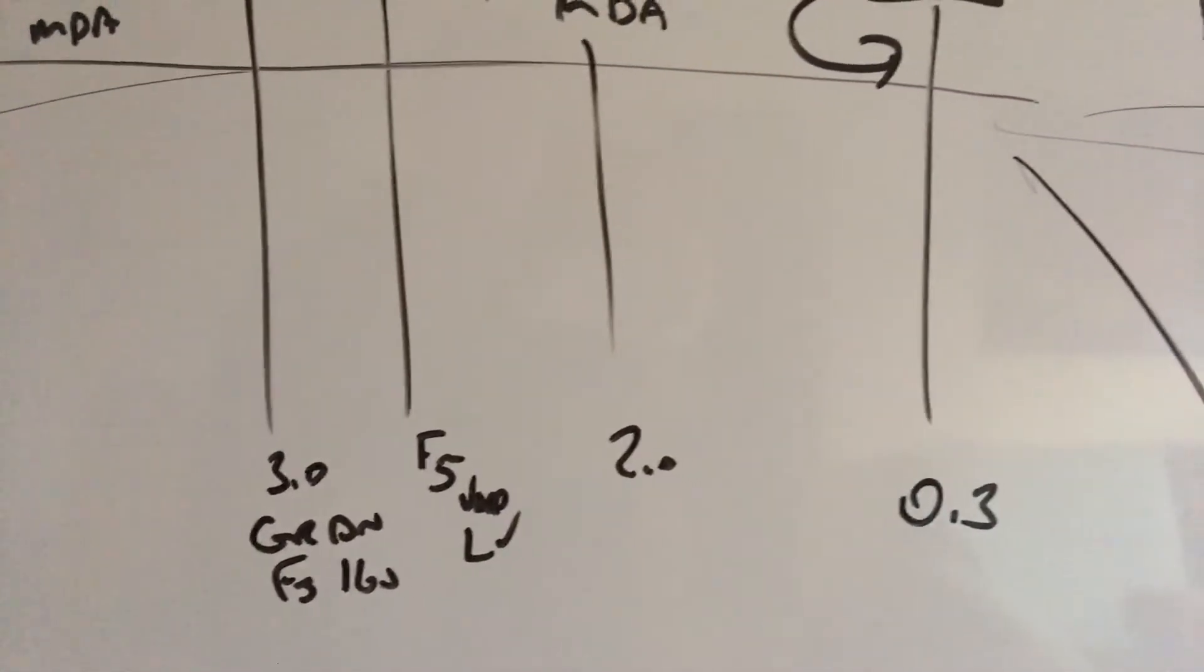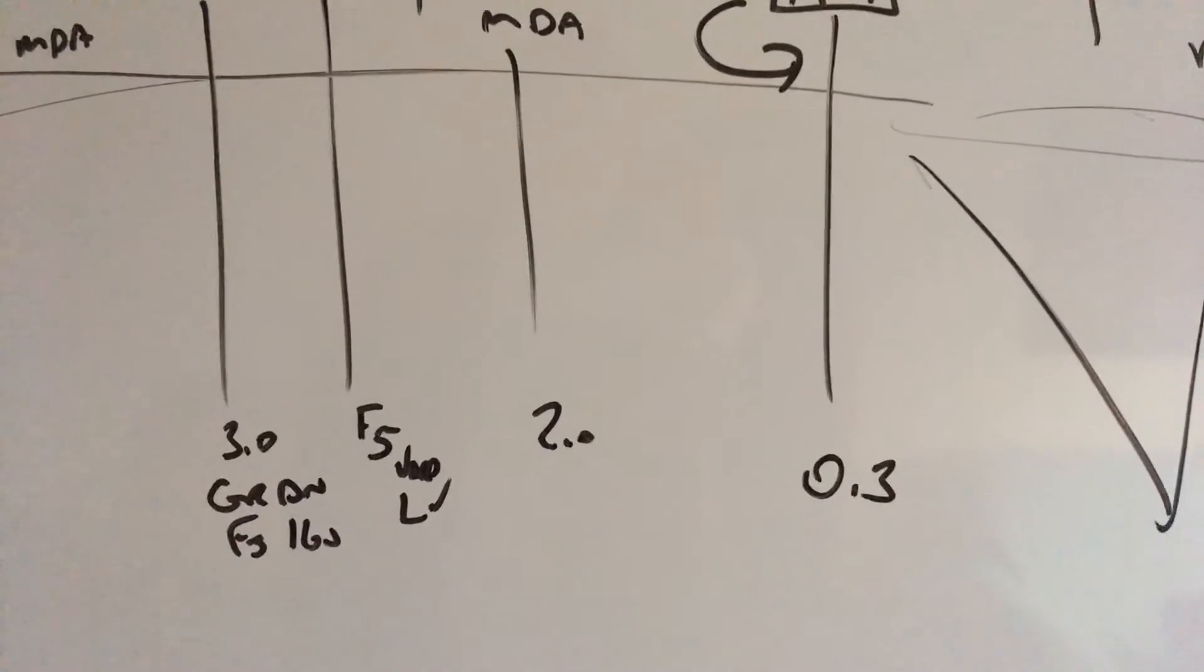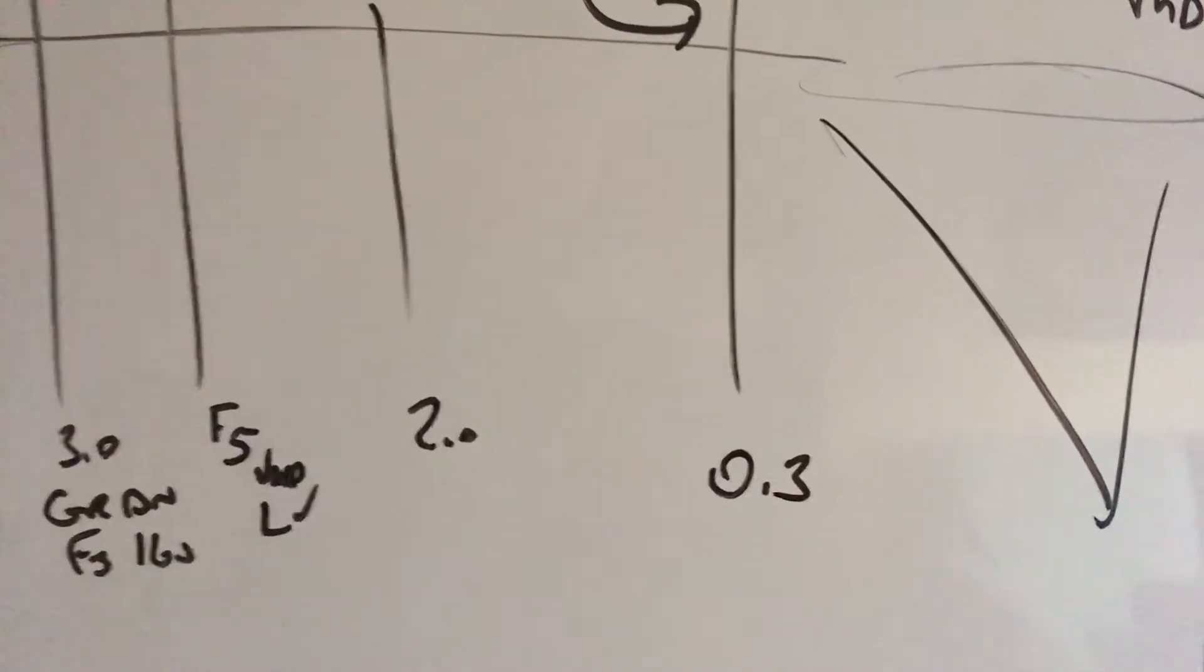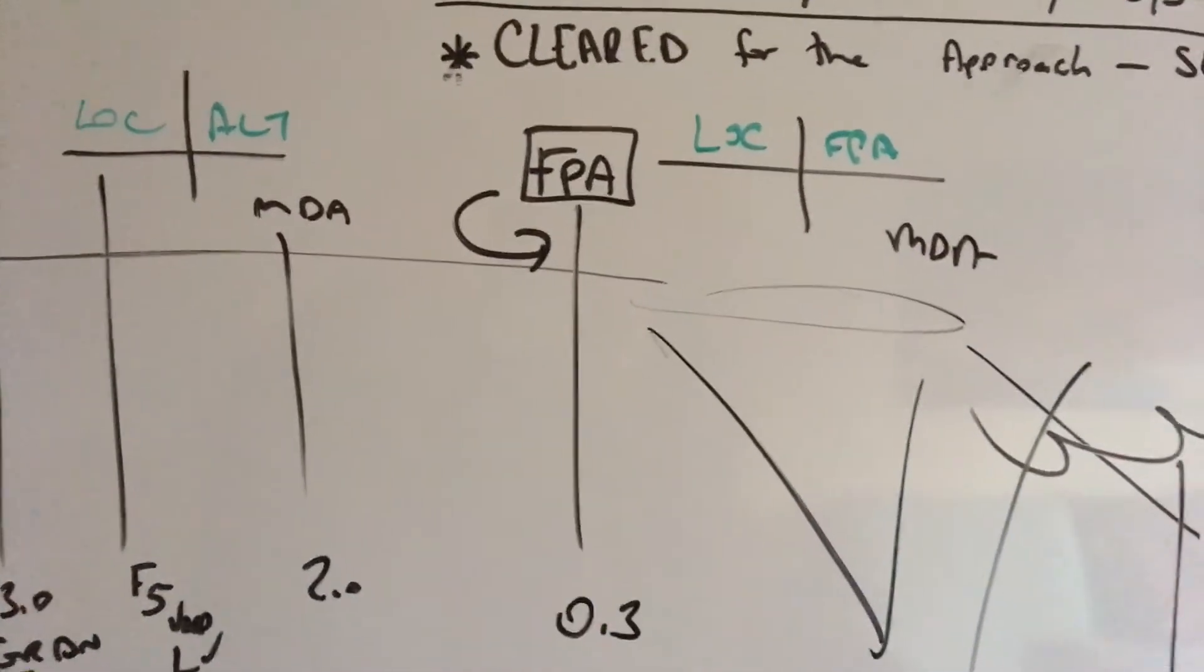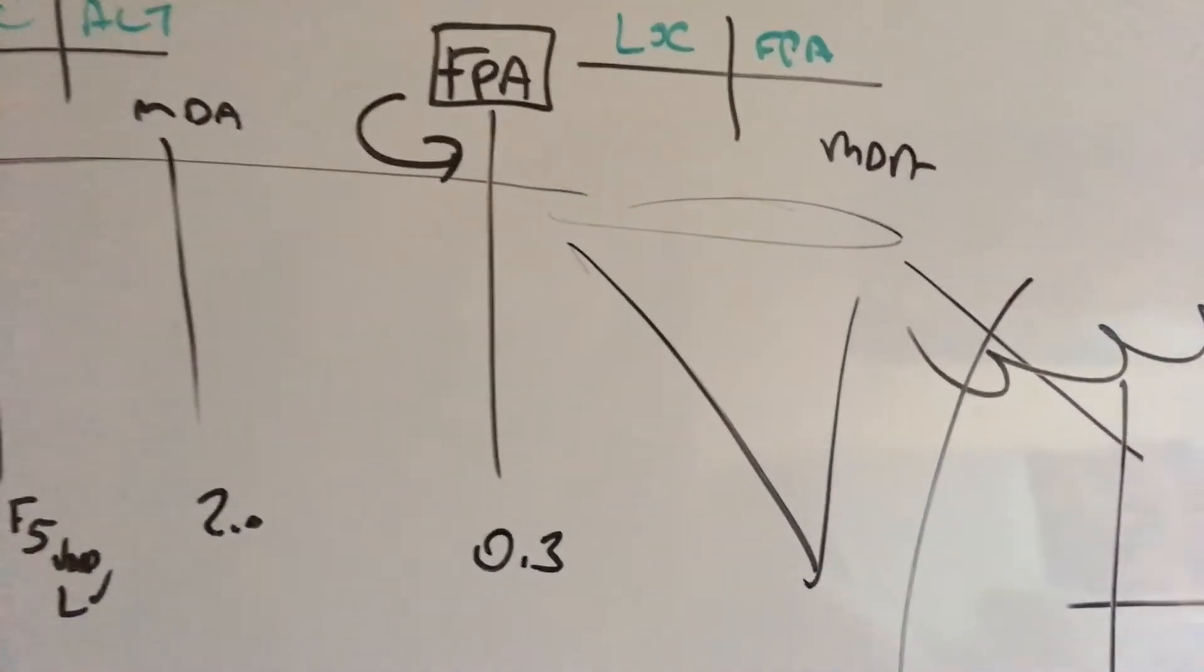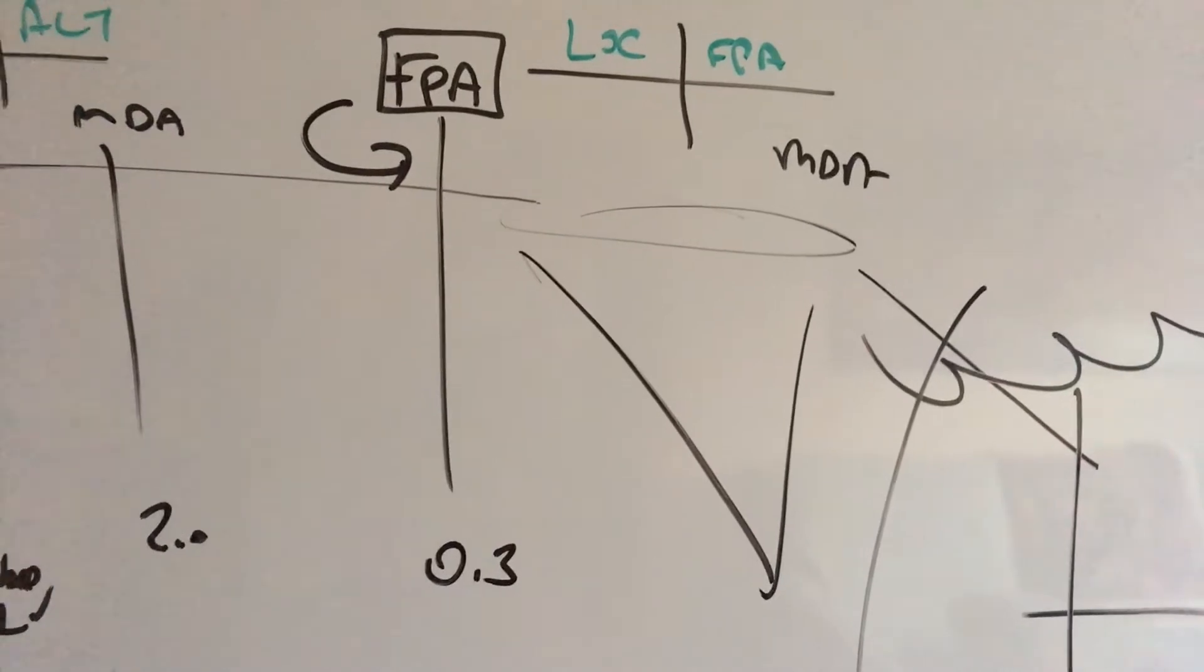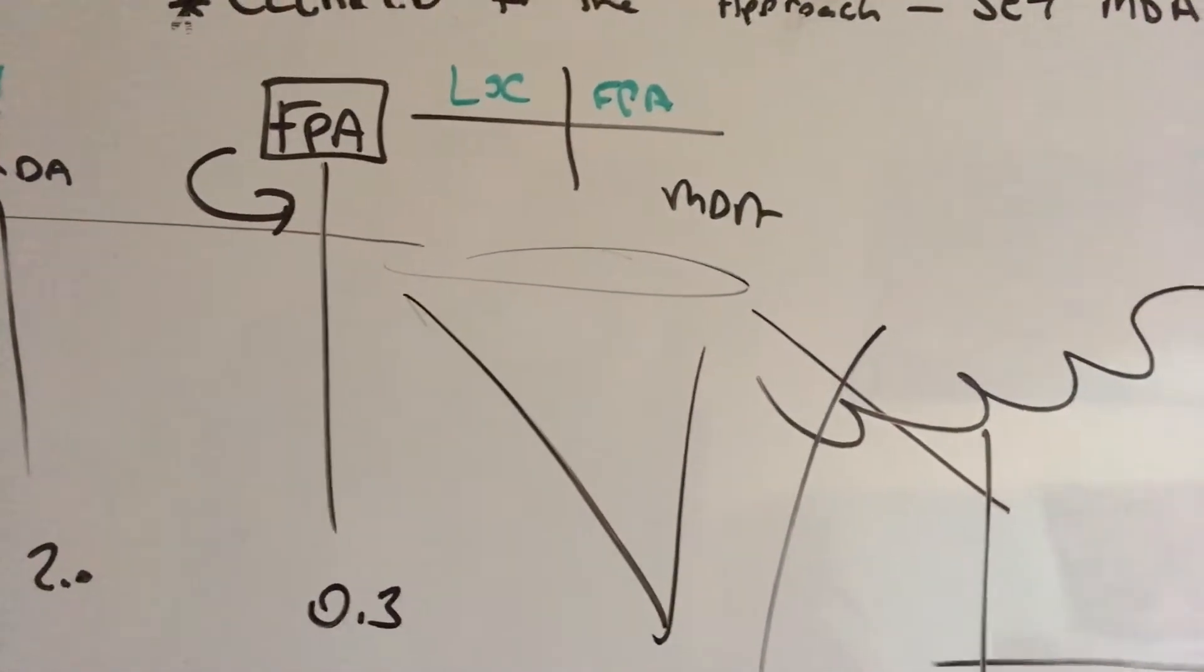Two miles, we're fully configured. Prior to two miles, coming in on point three, press FPA, roll yourself down to whatever's charted on your descent and continue on in.